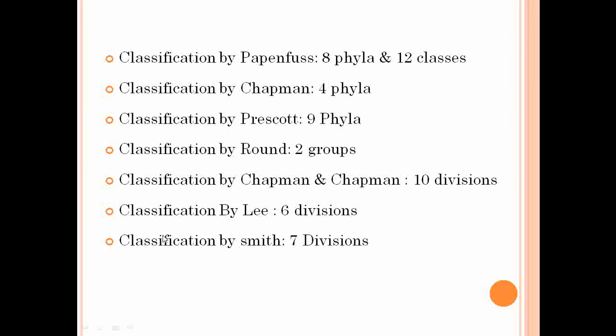The classification system proposed by scientist Smith is accepted everywhere for Algae because he used multiple characters: the type of chlorophyll pigment present, type of reserve food material, mode of reproduction, habit, thallus structure, and cell structure. Since all these characters are combined together, Smith's system of classification is accepted everywhere.